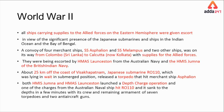During World War II, all ships carrying supplies to the Allied forces were escorted by other ships. Two supply ships, SS Asphalion and SS Melanthus, were carrying goods. To escort them, two other ships were assigned: HMAS Launceston and HMIS Jumna. Launceston and Jumna were escorting these supply vessels.